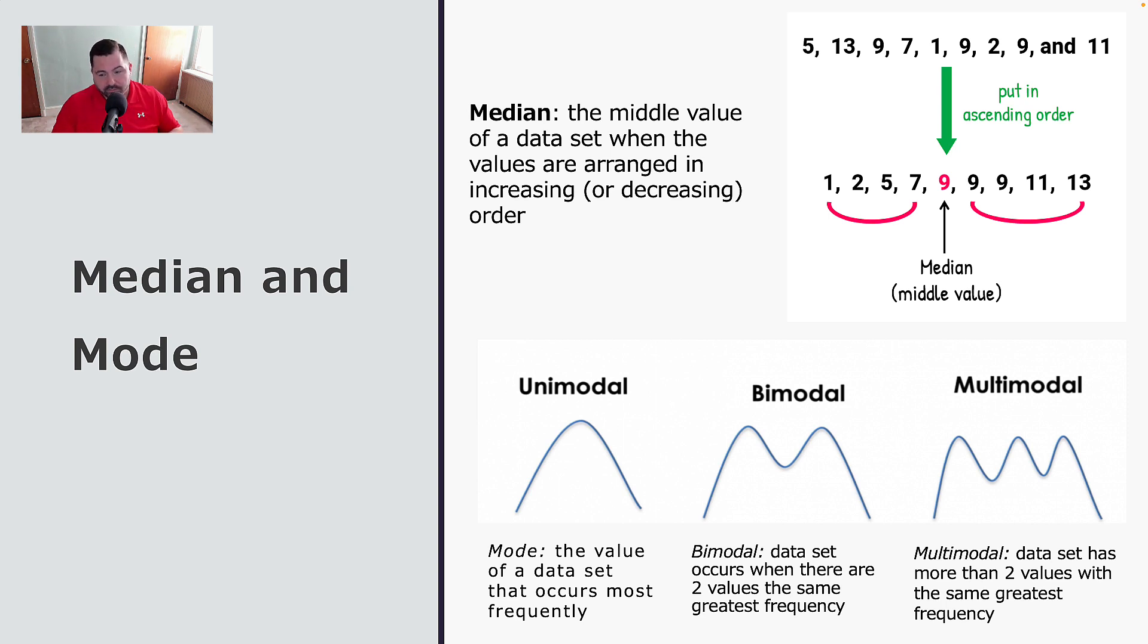More than one mode would mean that the number that occurs with the greatest frequency happens more than one time. So in this particular case, we only have one mode here, because one, two, five, seven, you have three nines. So the mode, the number that occurs most often would be nine.